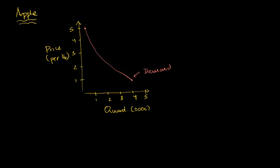Now let's think about our supply curve. There's some price below which we aren't even willing to produce apples — let's say that's about 50 cents. At $1, the quantity we'd be willing to supply is about 1,000 pounds, and it just keeps increasing as the price increases. This is the supply curve for all of the suppliers in this market.